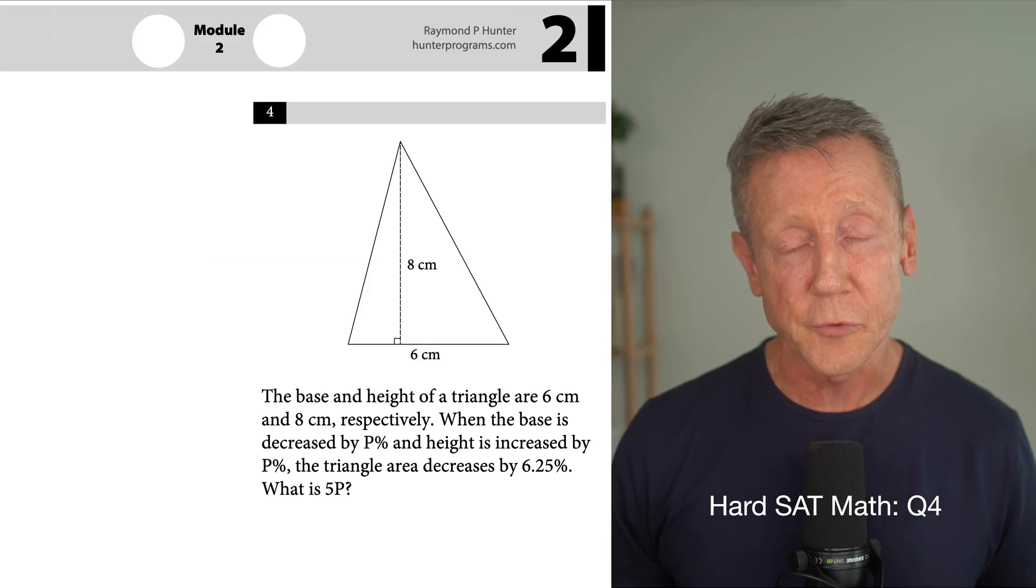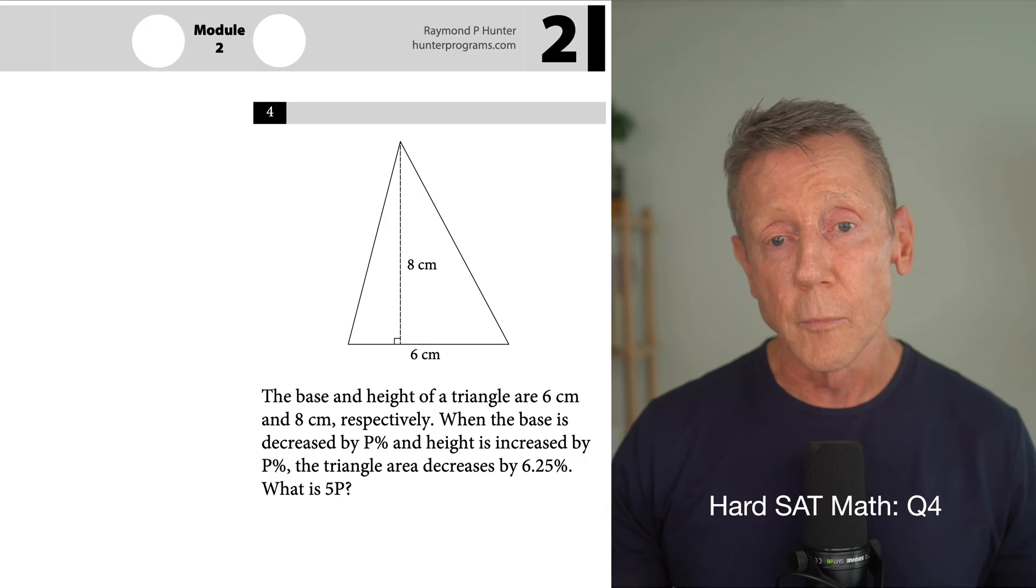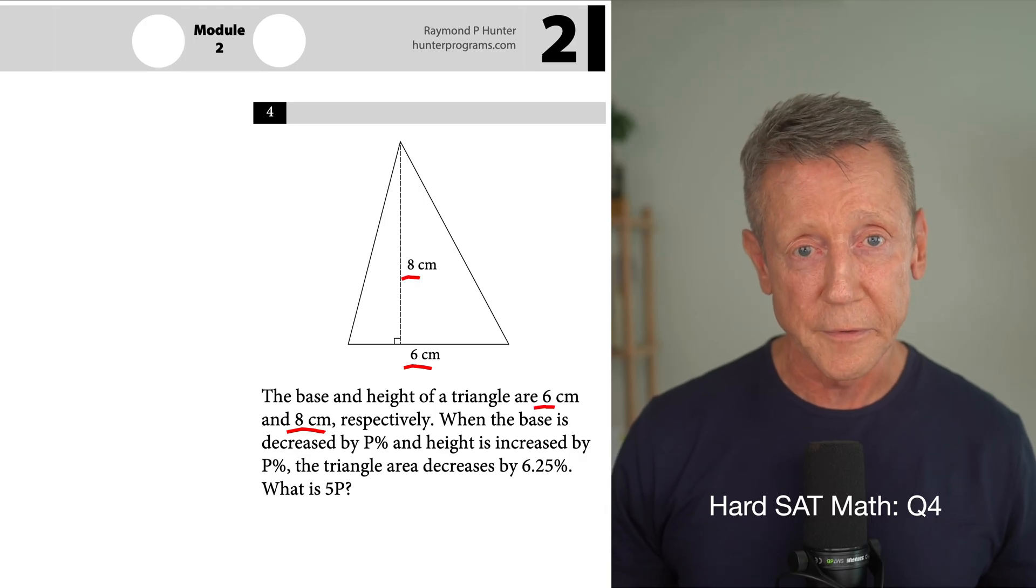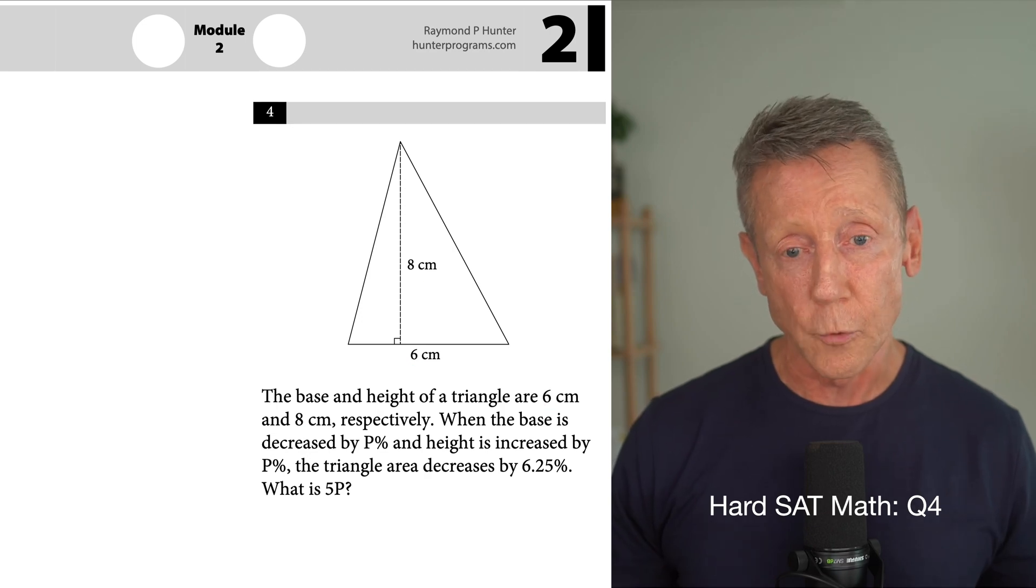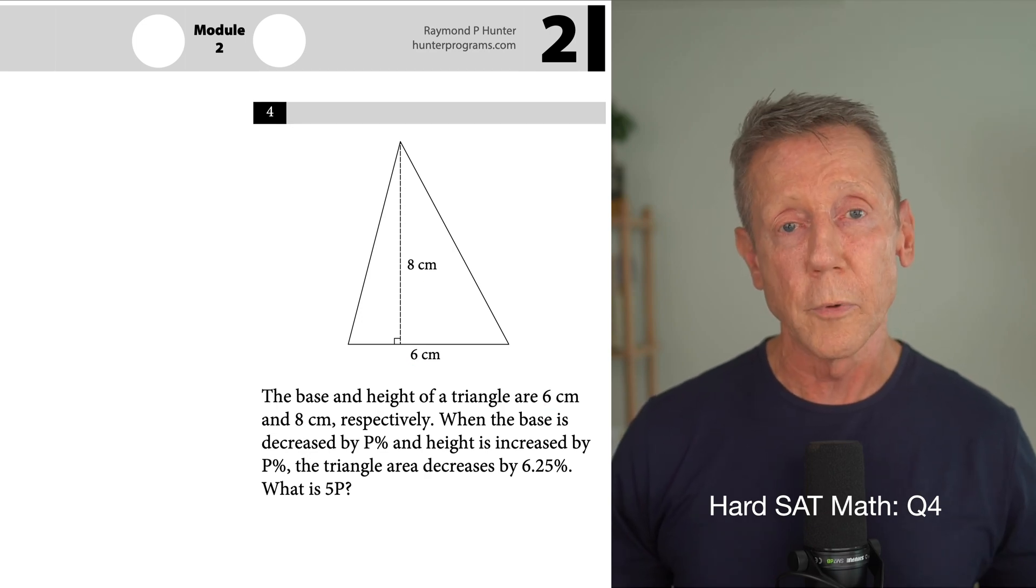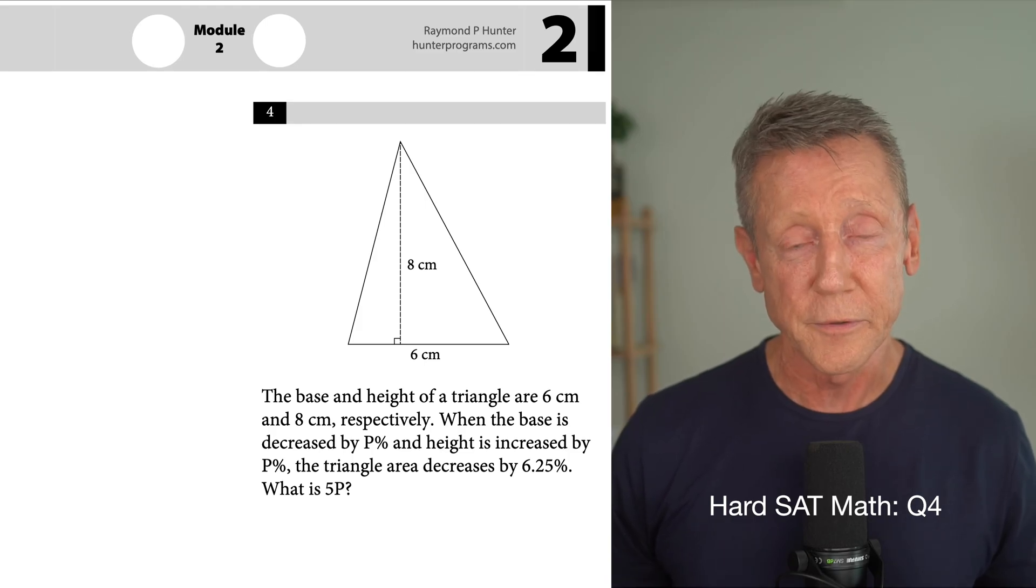The only difference between question 1 and question 4 is question 4 has a drawing. And it has a distractor trap at the end where it asks for 5P instead of just P. The numbers on the drawing are the same as the numbers in the sentence. So, the only purpose for the drawing is to make it easier for you to visualize. I'm not going to bother working this out because you could actually do the problem without even having the drawing. And then it is the same problem as question 1.